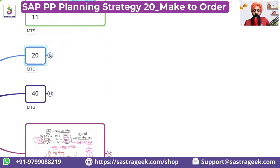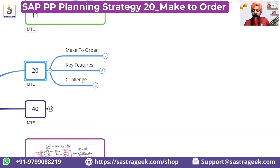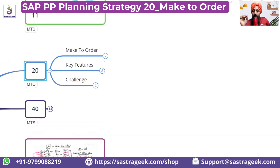Strategy 20 is completely opposite. In strategy 20 we completely do make-to-order. We don't check what the demands are, what the planned independent requirements are. Whatever sales order is there, against that sales order we create a production order and supply it. All the production orders would have an assignment to the sales order.